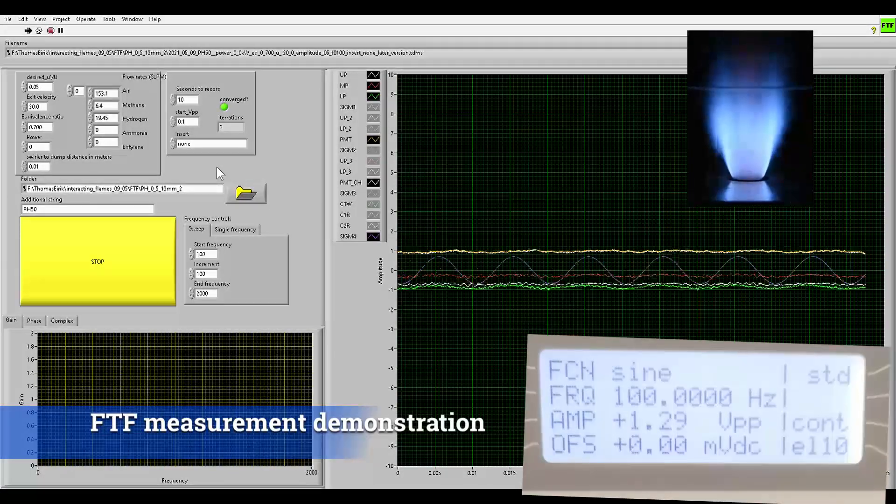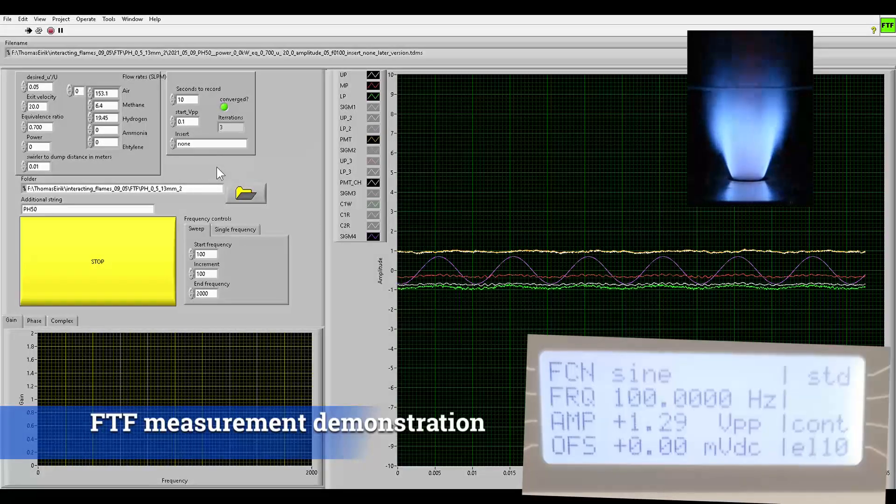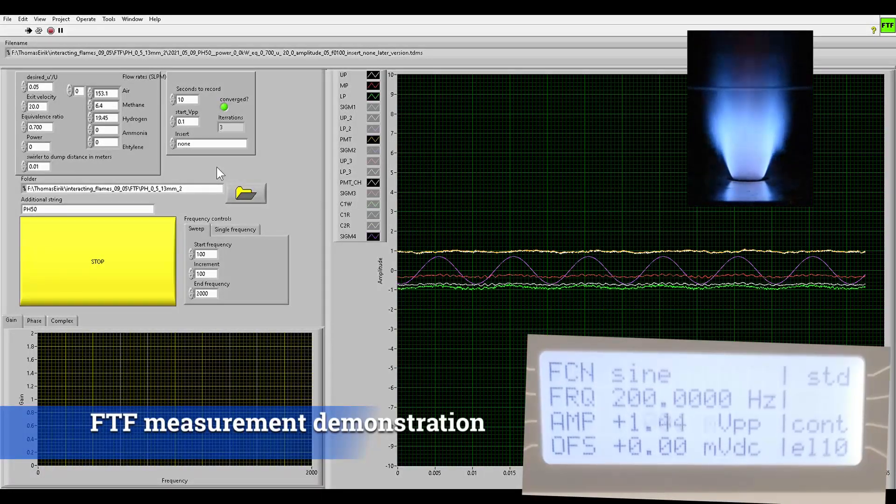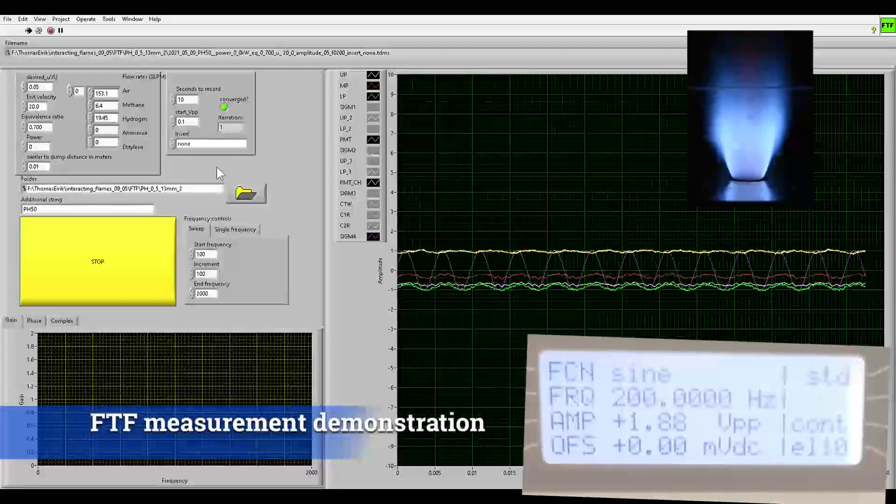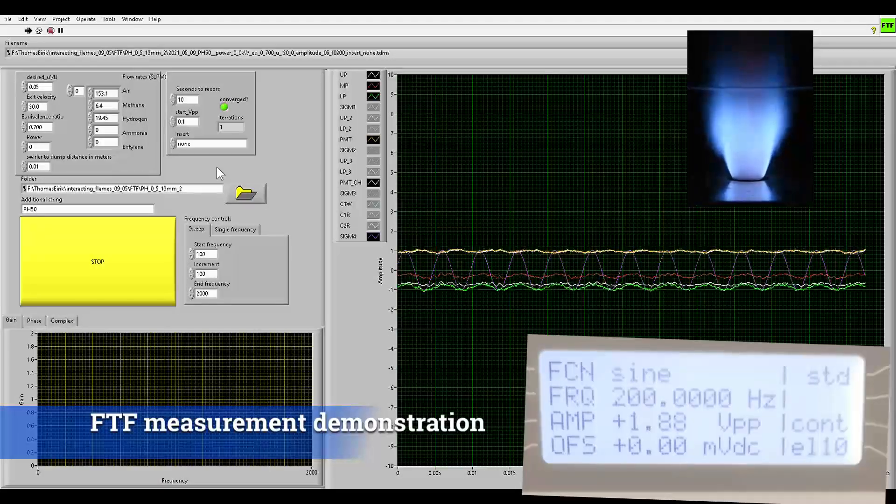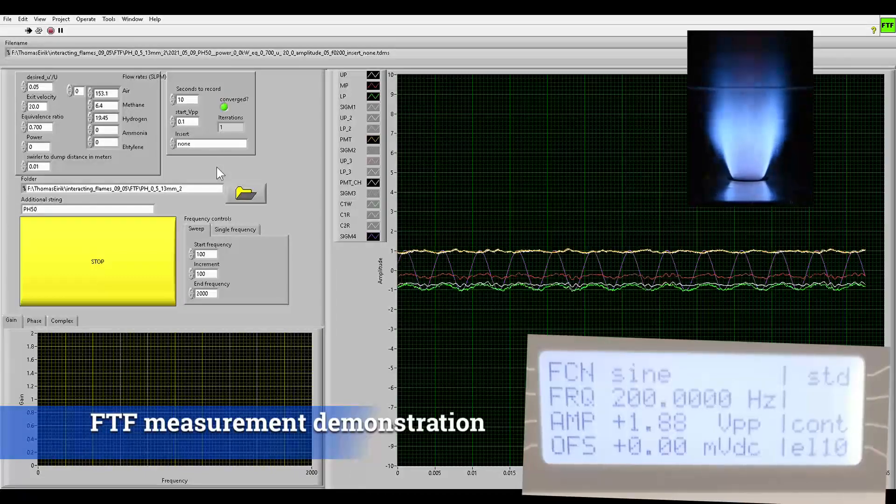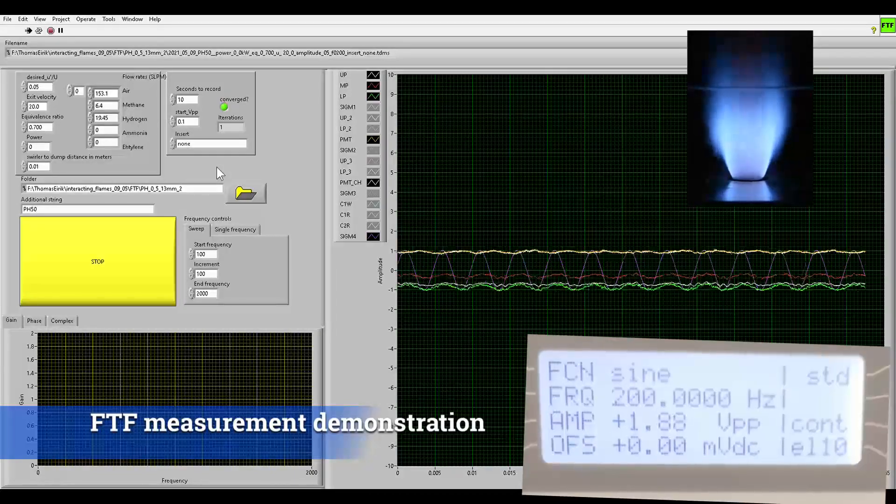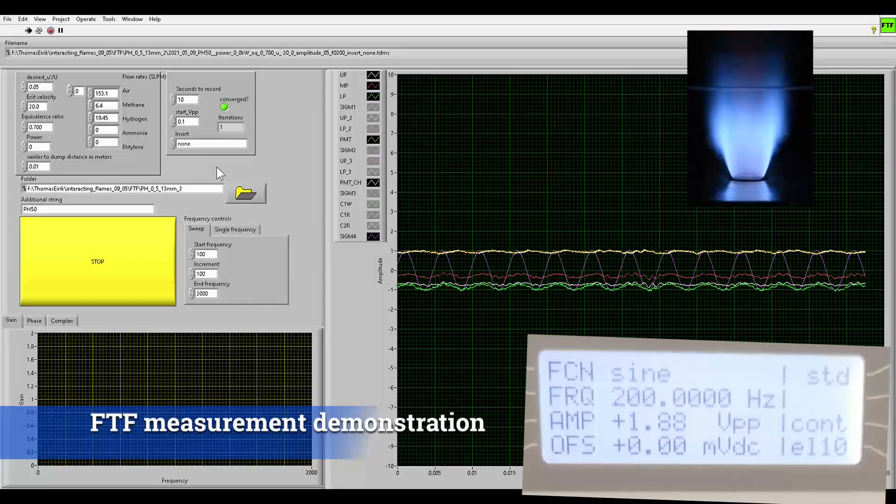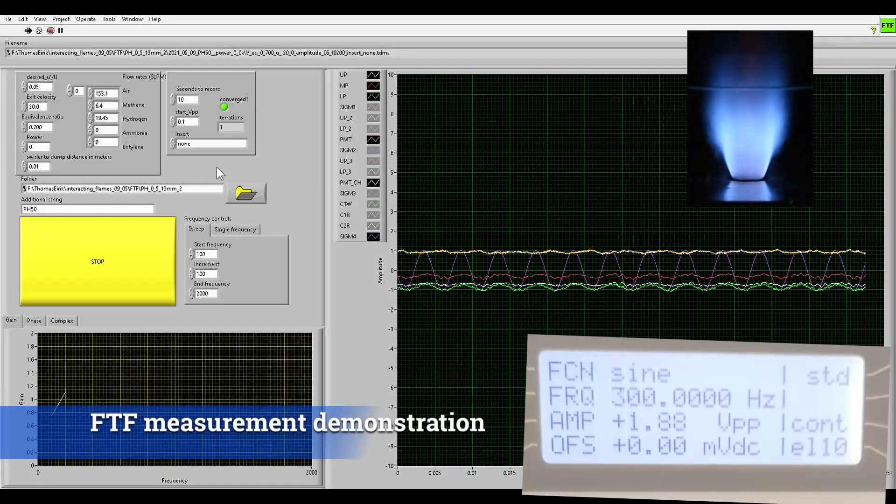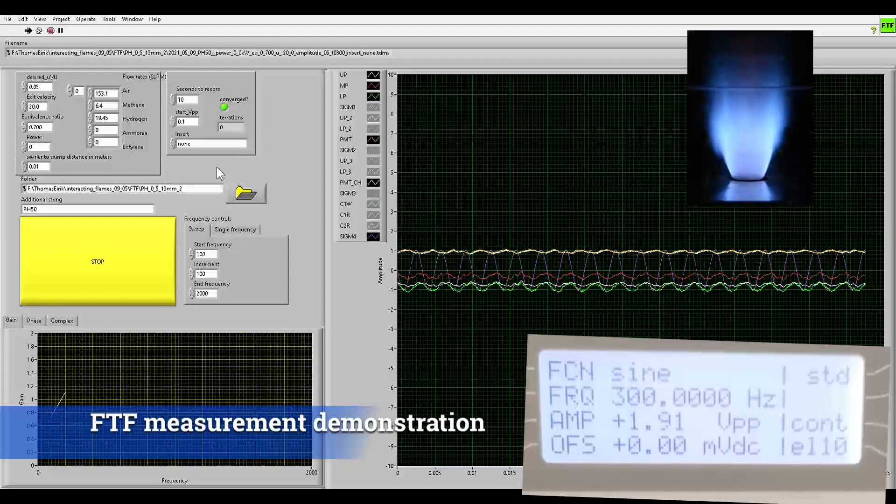The VI communicates with the signal generator to set the frequency of the voltage signal sent to the speaker drivers and to tune the amplitude. The front screen of the signal generator is shown on the bottom right. Waveforms are displayed as they are acquired. The signal from the signal generator is shown in purple, the pressure signals in white, green and red, and the PMT signals in white and yellow with a mean of about 1 volt.